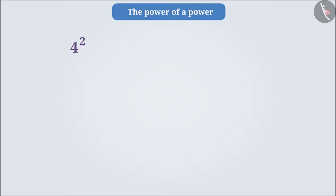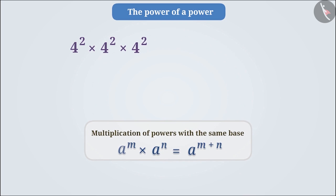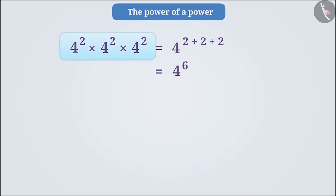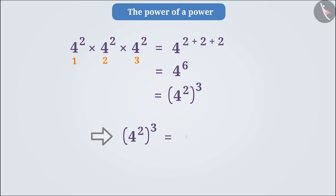Can we take the power of a power? Let us find out. Solve 4 squared into 4 squared into 4 squared. According to the law of exponents, during multiplication, the power of numbers having the same base can be written as 4 to the power of 2 plus 2 plus 2, which is equal to 4 to the power of 6. But if we look closely, 4 squared has been repeated 3 times, so we can write it as 4 squared to the power of 3. Therefore, 4 squared to the power of 3 is equal to 4 to the power of 6.